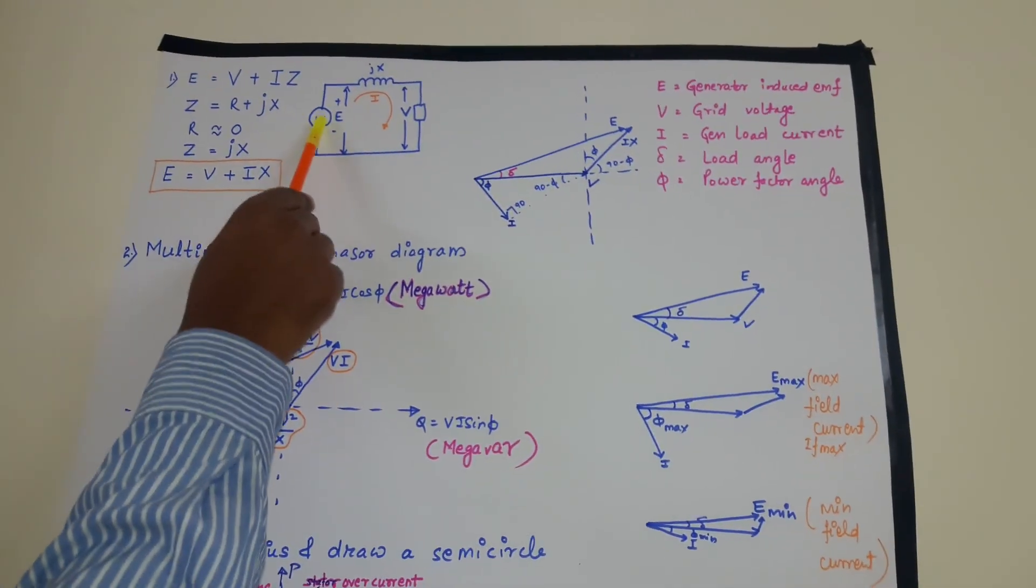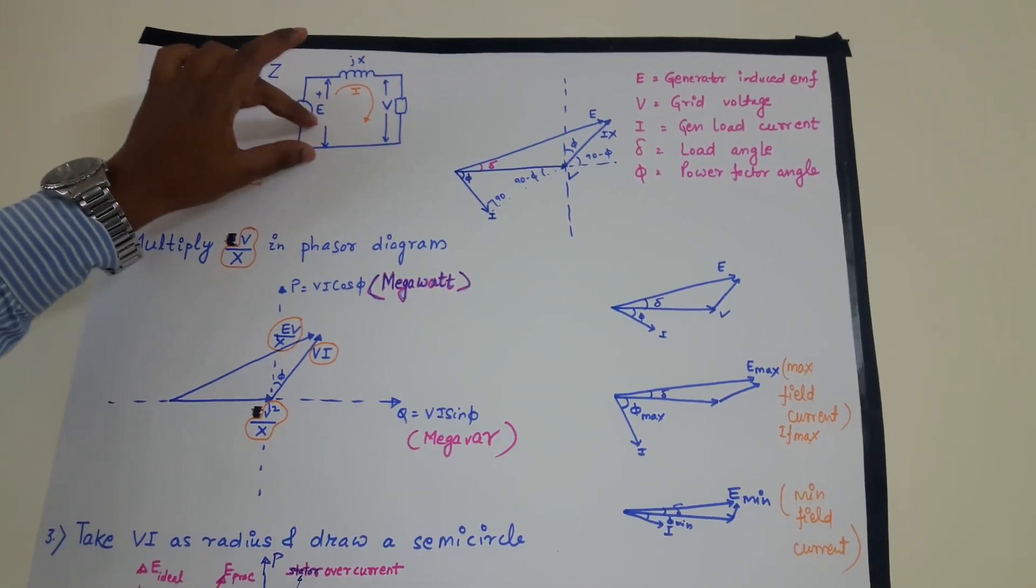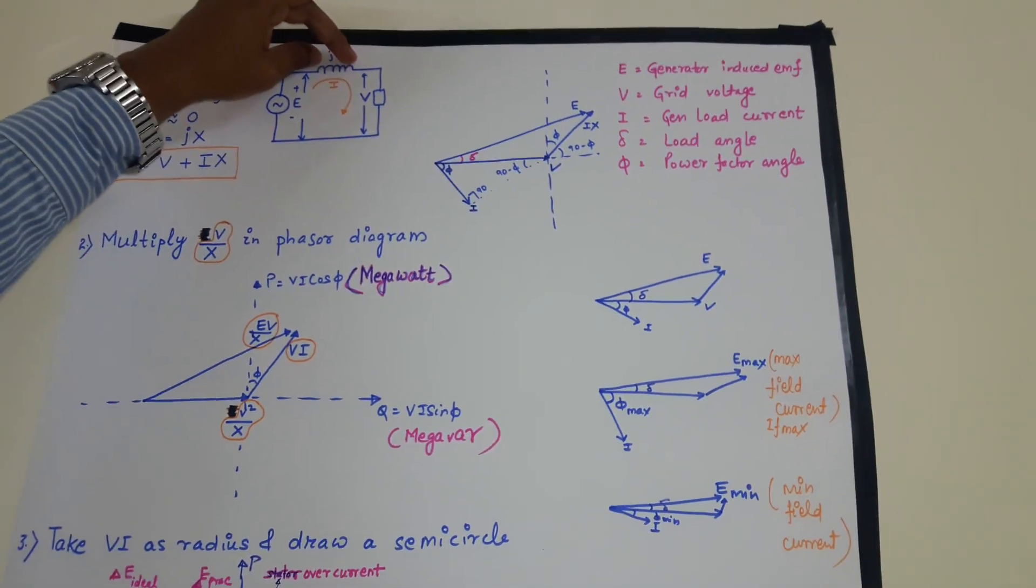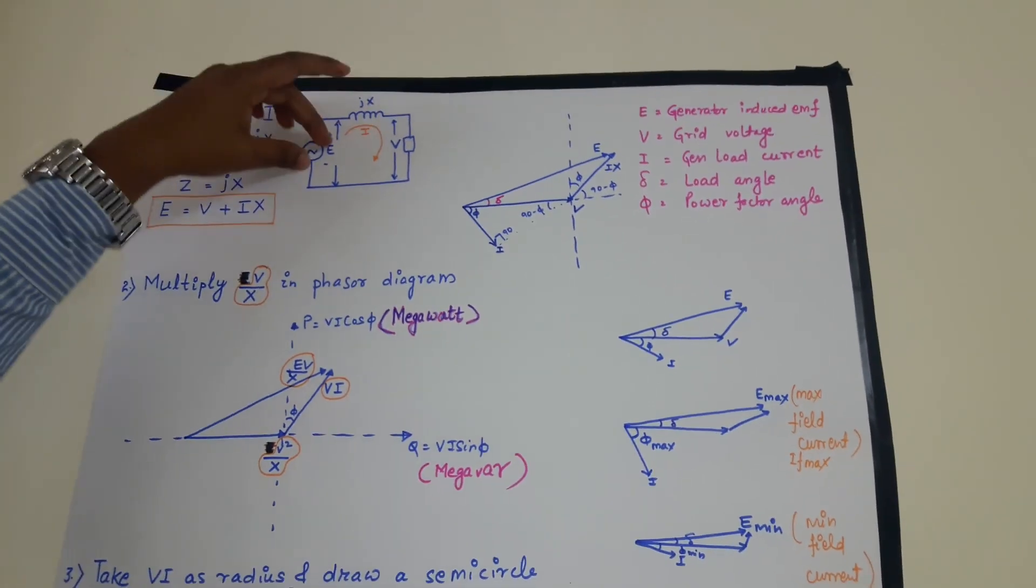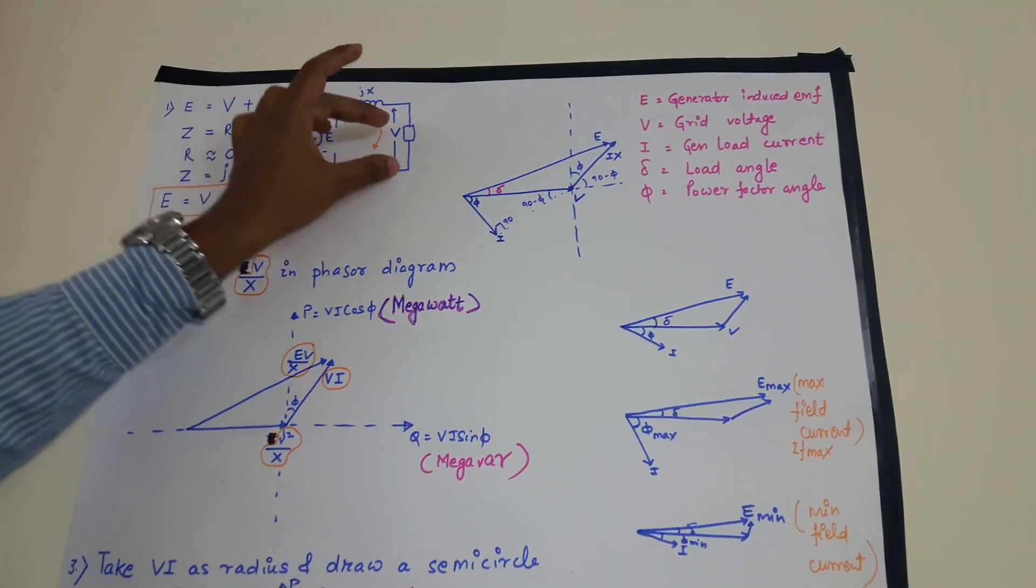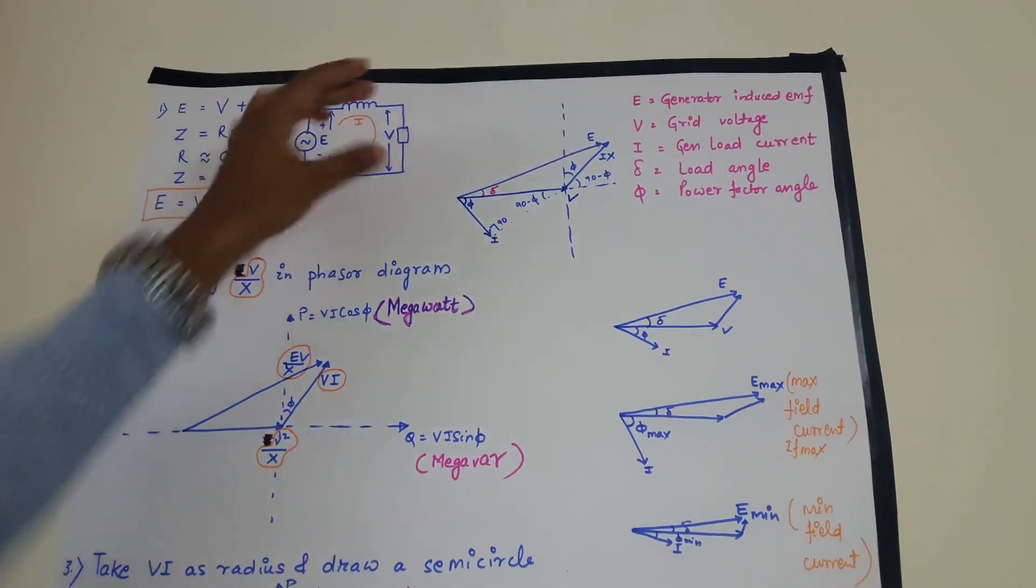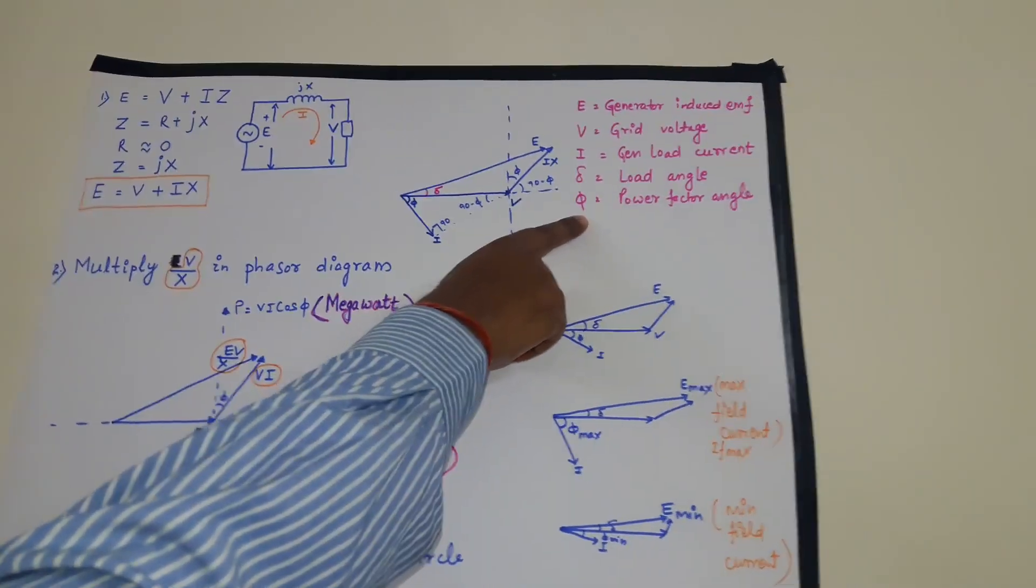This is our generator. This is my induced EMF E. This is the net impedance between generator and the system. This is my grid voltage.